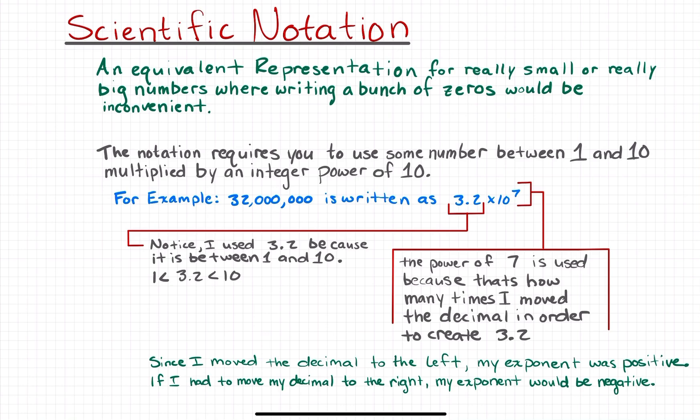Scientific notation is an equivalent representation for really small or really big numbers where writing a bunch of zeros would be inconvenient. This notation requires you to use some number between 1 and 10 and multiply that number by an integer power of 10.